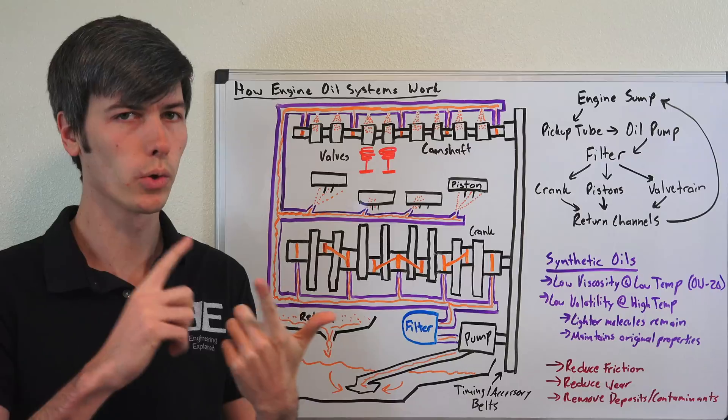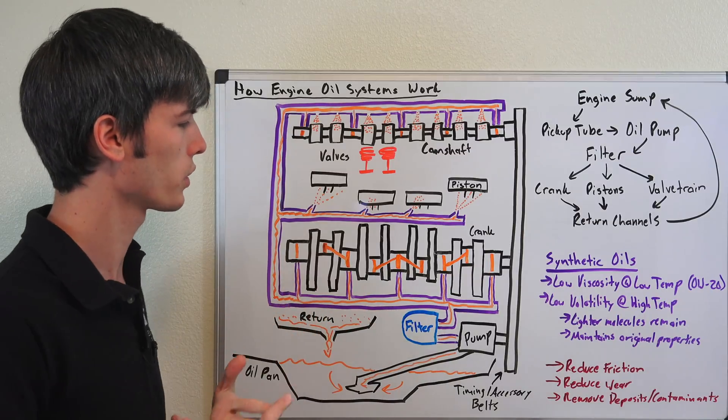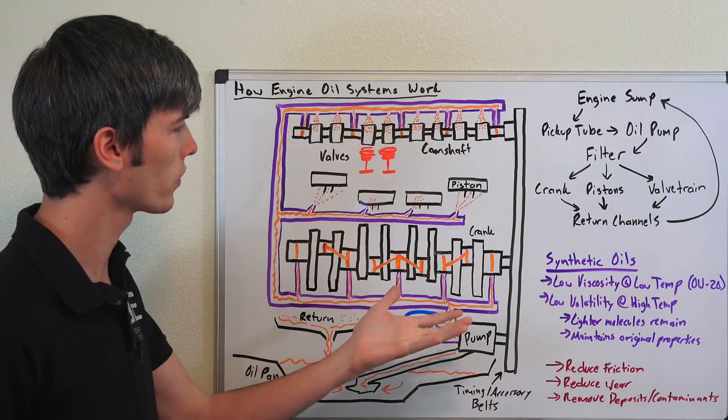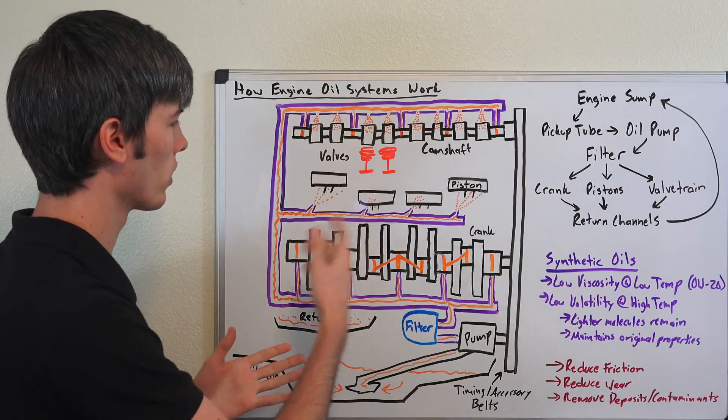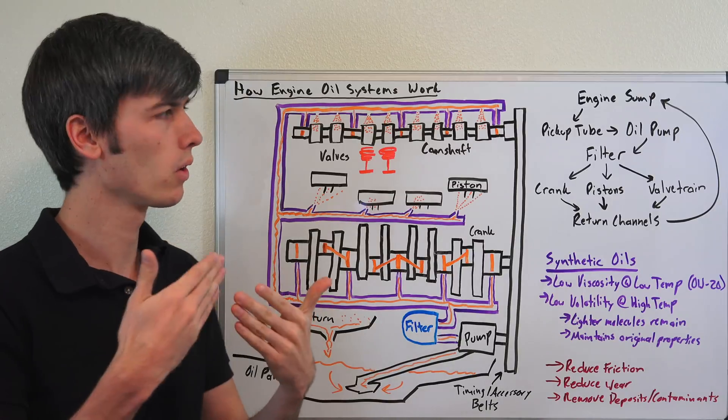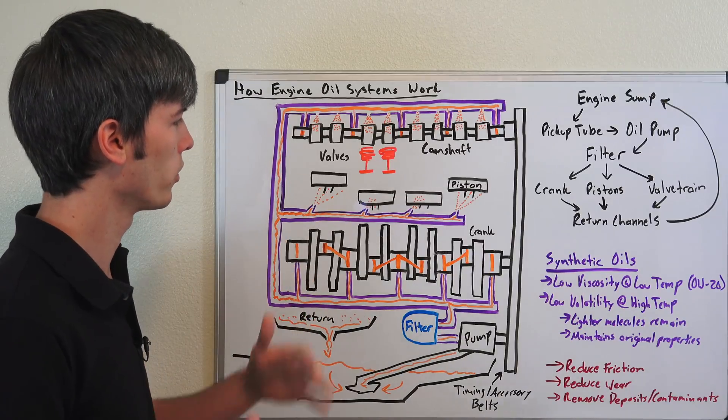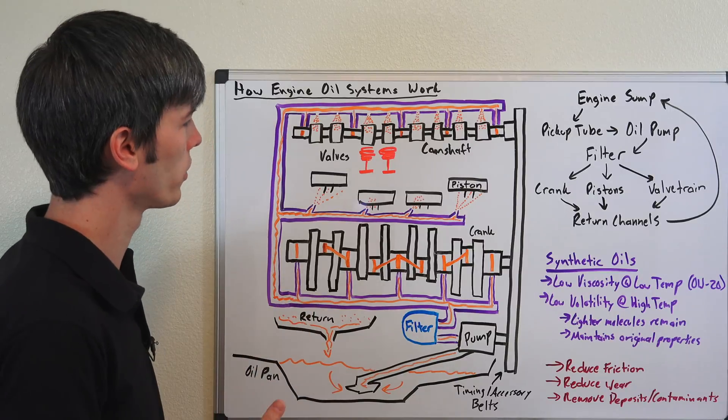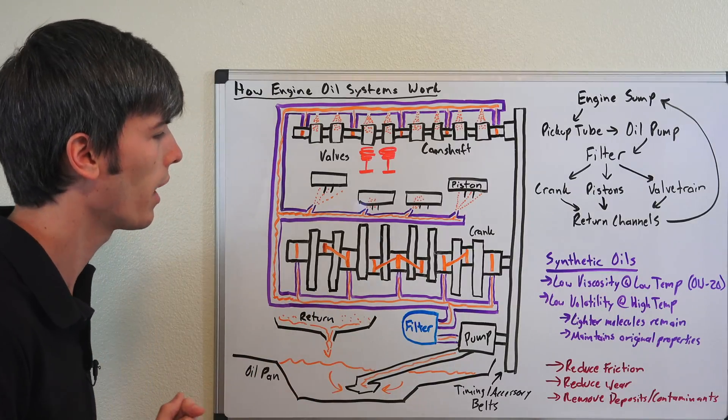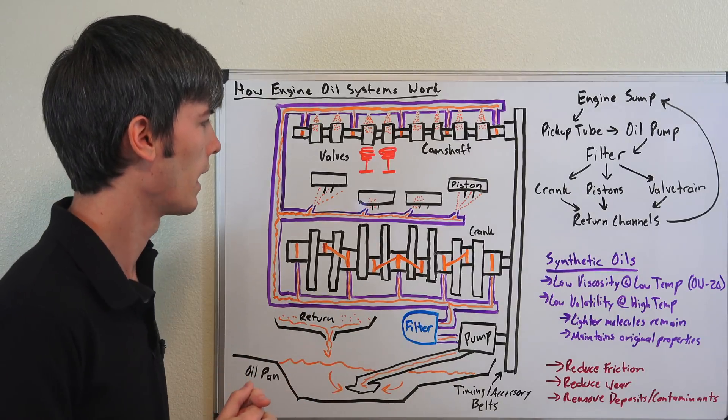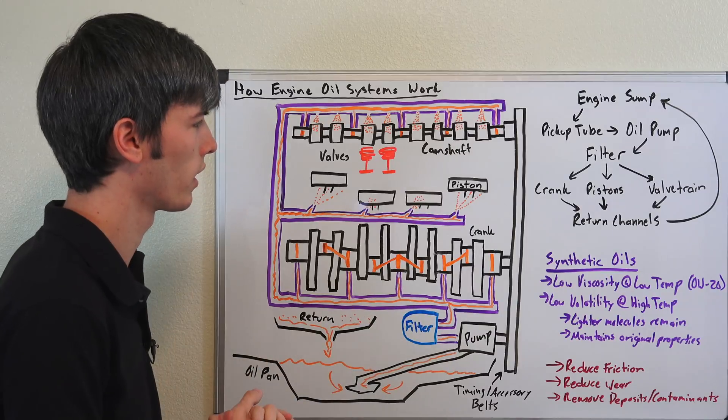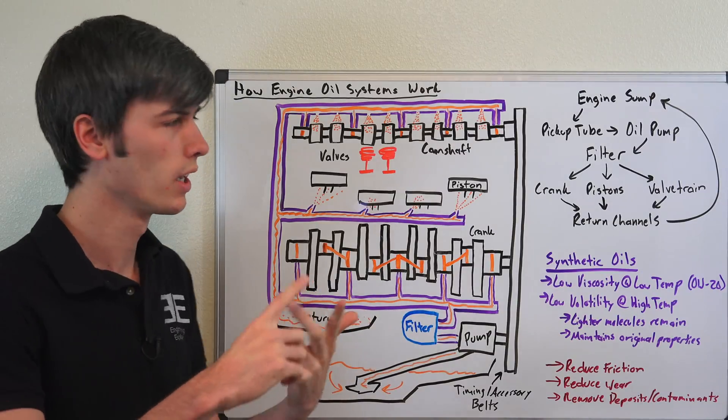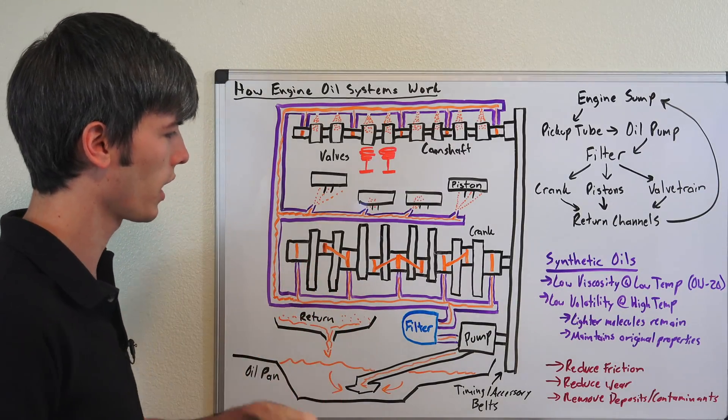They want to reduce friction, so you can create more power and be more fuel efficient. You want to reduce wear, that's probably the most obvious goal of having oil in here. So you want to prevent metal on metal contact by using oil in between those two metal pieces, and that will reduce wear. And then of course remove deposits or contaminants so you don't damage anything in the engine. So you want it to be efficient, you want it to last for a long time, and you don't want to damage it.